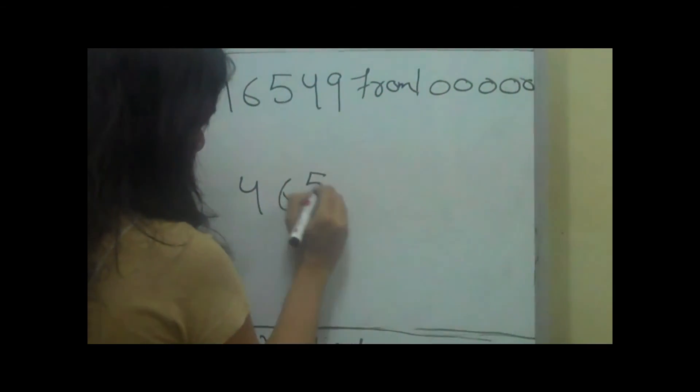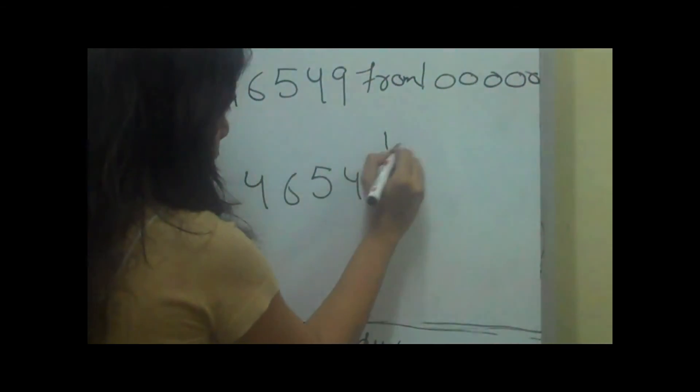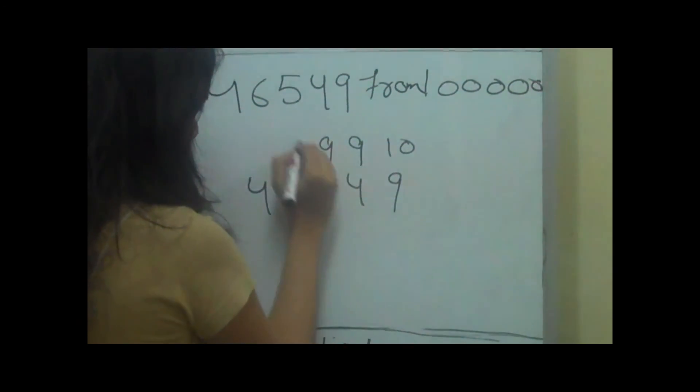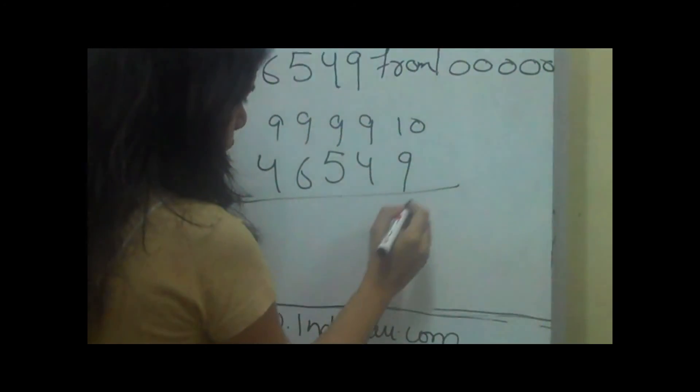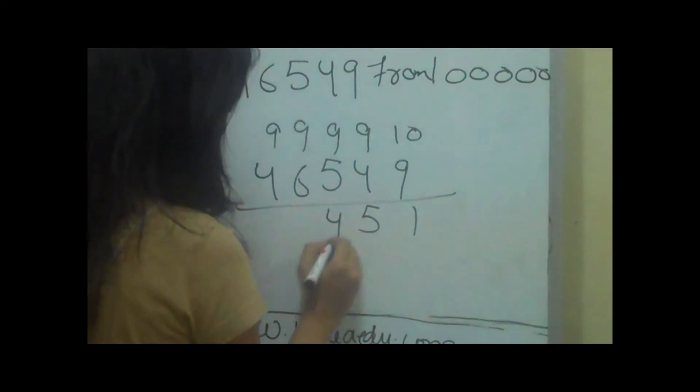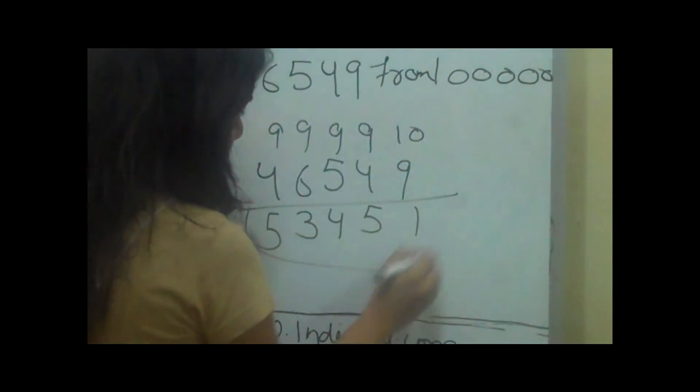So what we will do is subtract the last digit from 10 and other digits from 9, which makes 1, 5, 4, 3 and 5. And that's the answer.